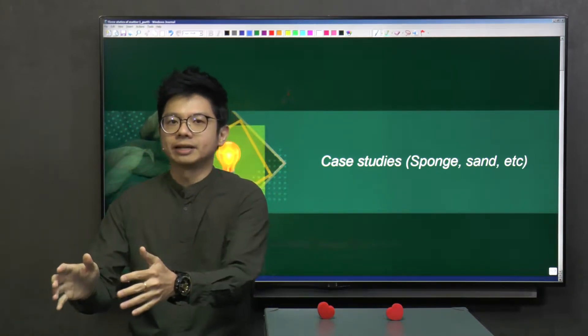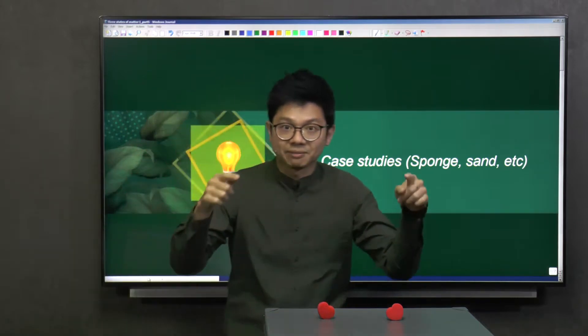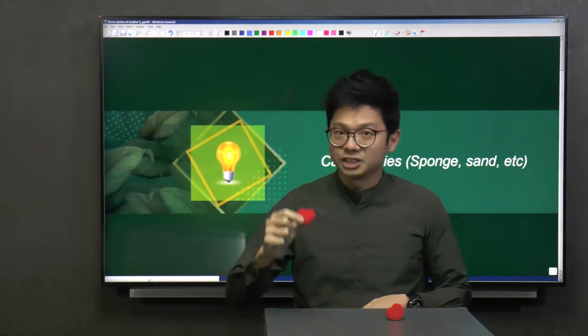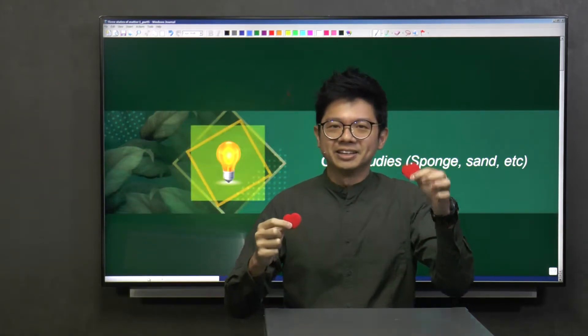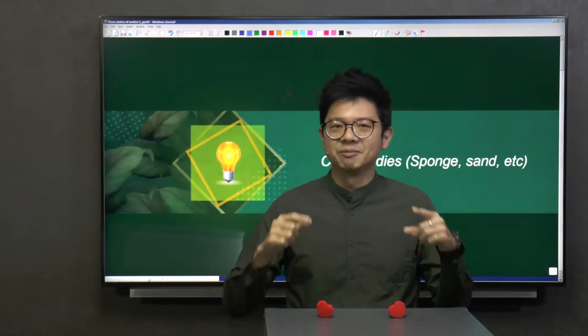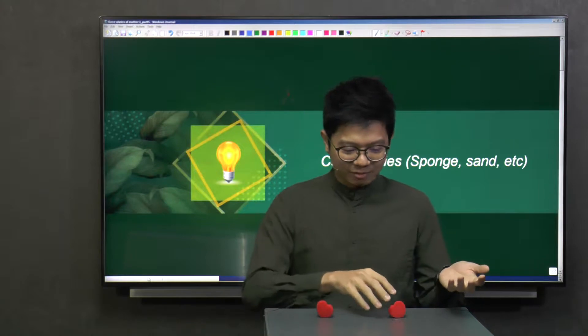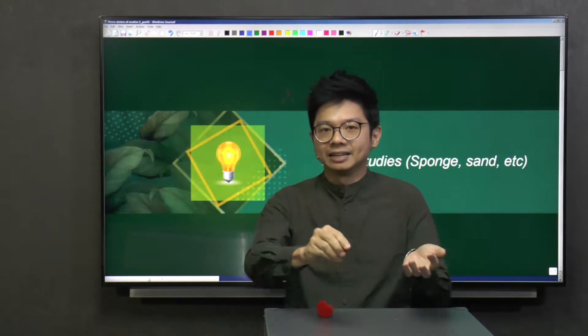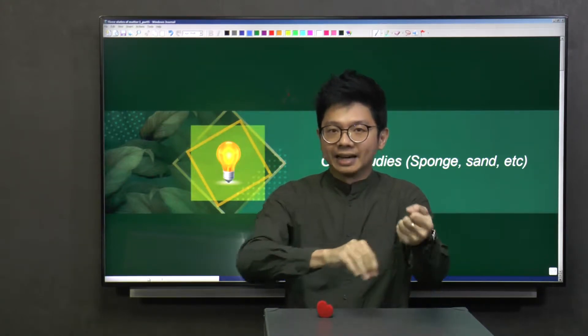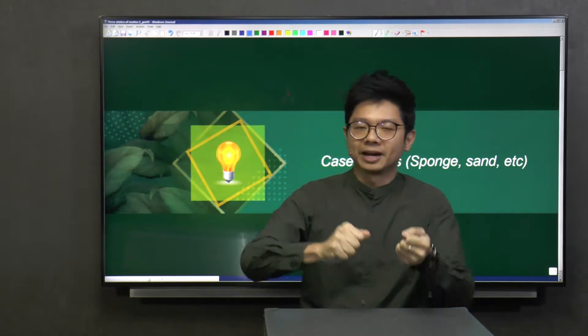But before we go into that, let me draw your attention to the setup here. I have a heart shape here and another heart shape. So I'm going to perform a magic trick. Usually I only perform this to my wife. I'm going to take one heart shape and put it into my left hand, and the other one I'm going to put in my right hand.